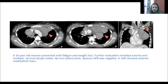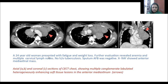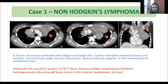The first case is a 24-year-old woman who presented with fatigue and weight loss. Further evaluation revealed anemia and multiple cervical lymph nodes. There is no history of tuberculosis. Sputum AFB was negative and X-ray showed an anterior mediastinal mass. CT chest showed multiple conglomerate lobulated heterogeneously enhancing soft tissue lesions involving the anterior mediastinum. Biopsy revealed non-Hodgkin's lymphoma.